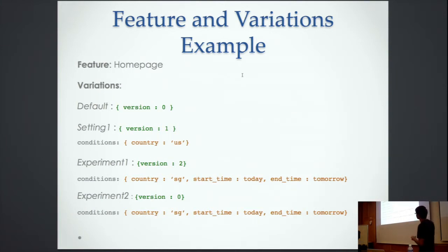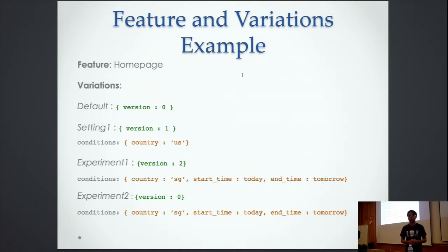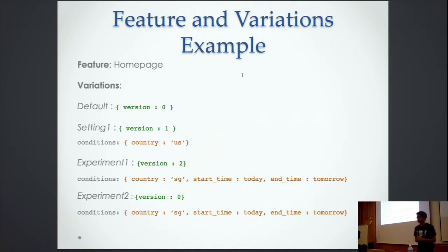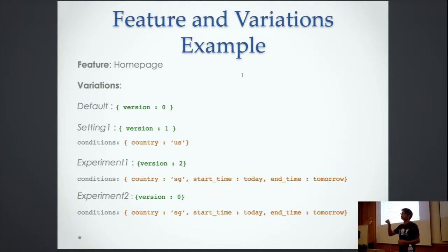To clarify with an example: you have feature 'homepage'. Default variation is variation zero. Setting is variation one, with the condition of country US — so all users in the US will see variation one. Now we're running two experiments for the Singapore audience — for two days, 10% of the audience sees version two and 10% sees version zero as the control. Then we figure out if version two is doing better than the control, and if so, we promote it.